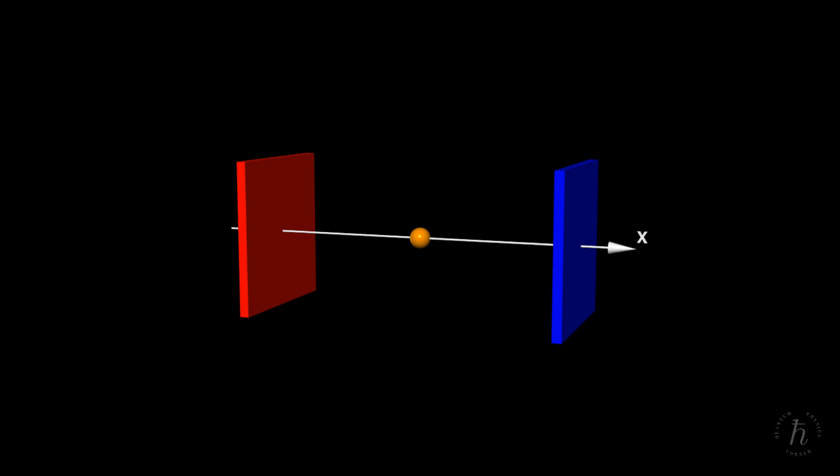This trapped one-dimensional particle is what physicists commonly refer to as the particle in a box system. The picture we've constructed so far is purely classical, it doesn't capture how a quantum particle actually behaves.